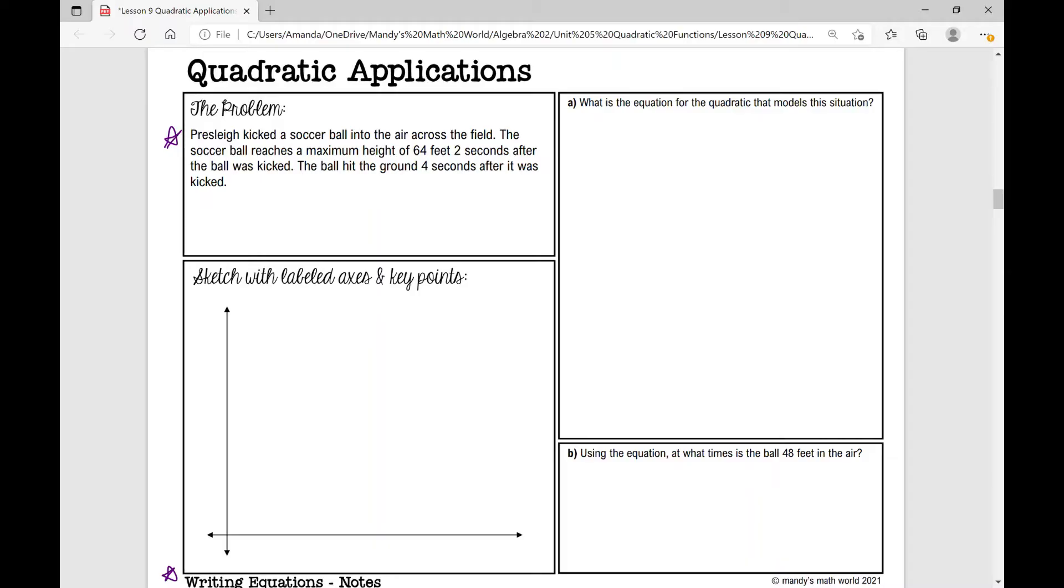This particular problem says Presley kicked a soccer ball into the air across the field. The soccer ball reaches a maximum height of 64 feet two seconds after the ball was kicked. The ball hit the ground four seconds after it was kicked. We're given some information here.